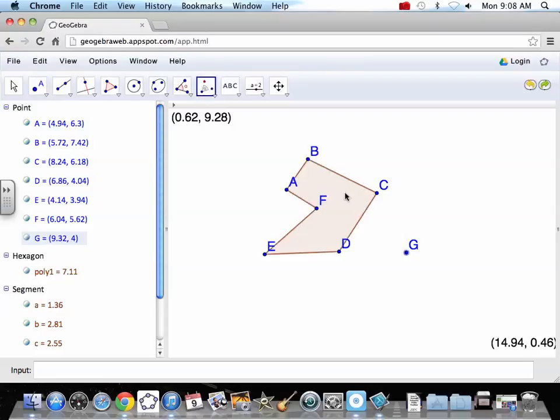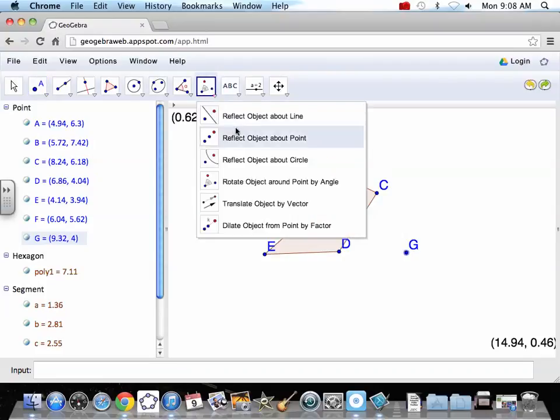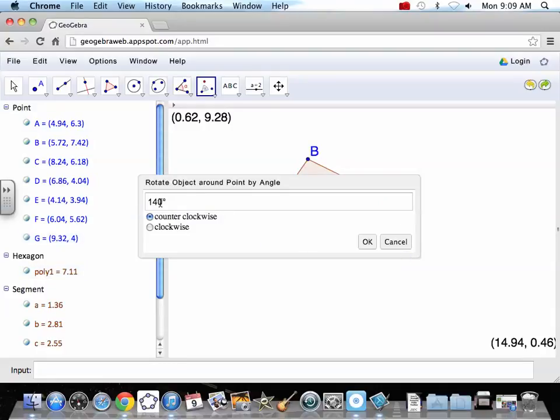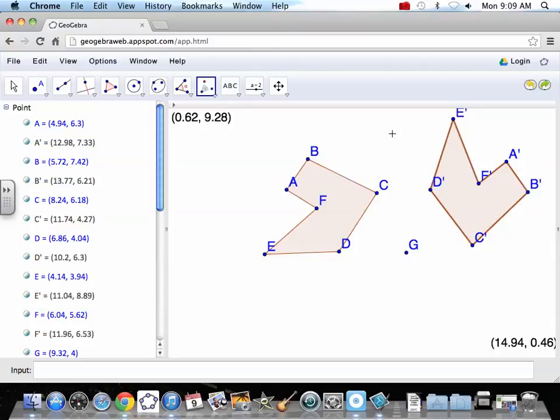Now we're going to rotate. So again, we clicked on our rotate. Click the object. Click our pivot point. And pick an angle. Let's go 110. Let's go clockwise this time. So it turned it this way 110 degrees.